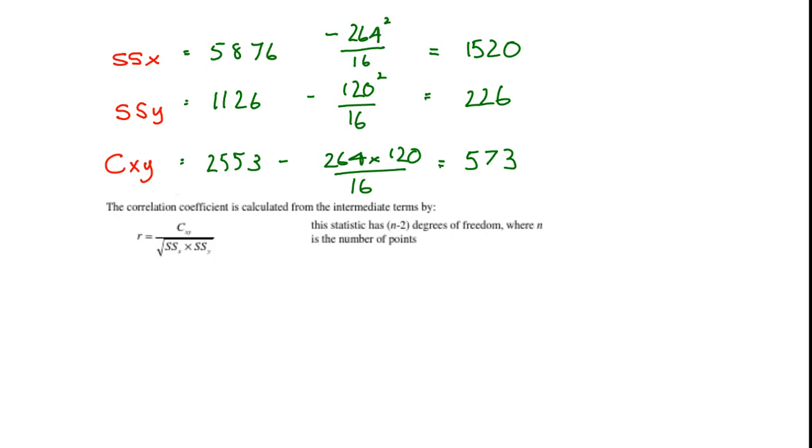And finally we need to use those values in the formula for the correlation coefficient, which I put down here. And it's quite simple. It's covariance xy on top, divided by the square root of sum of squares x by sum of squares y.